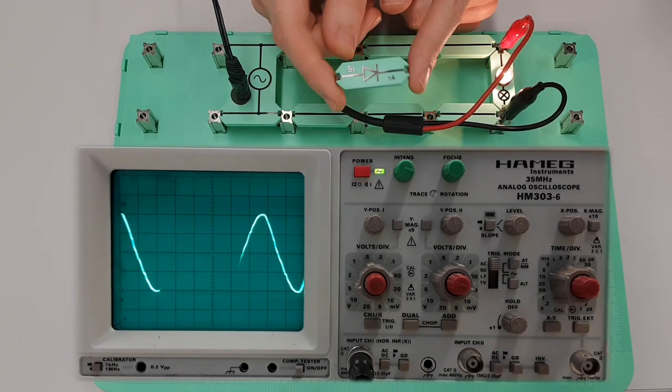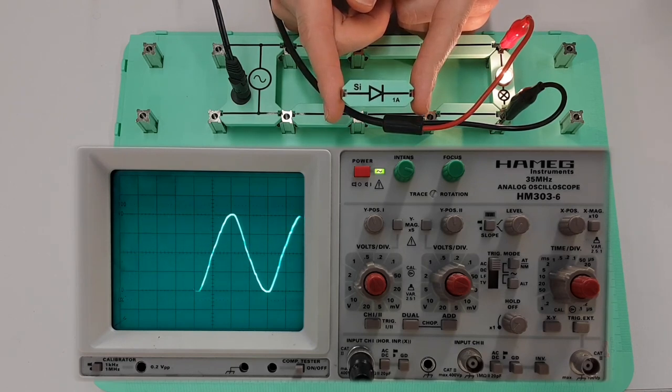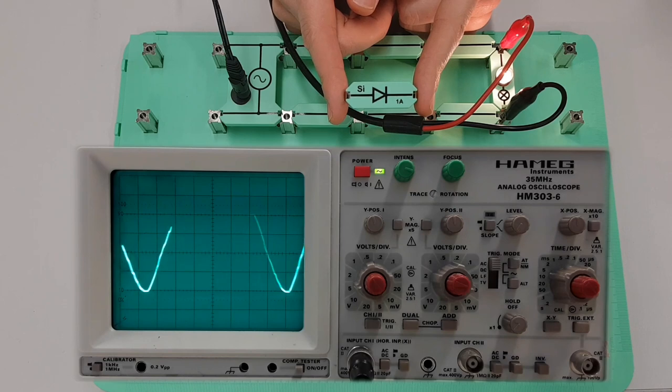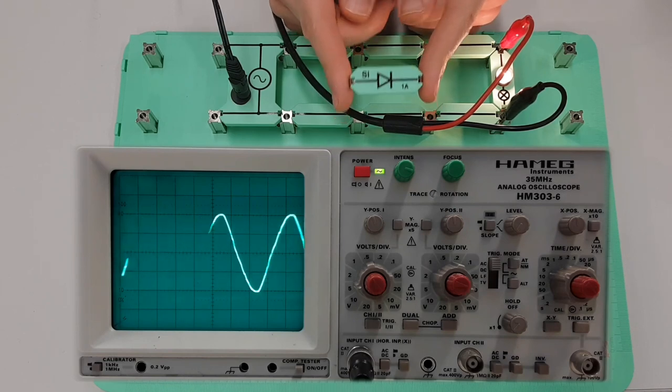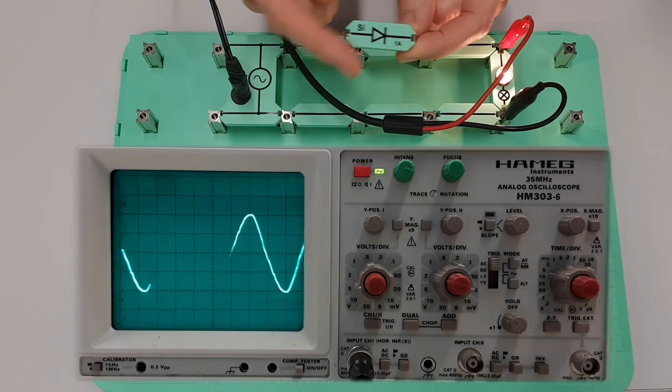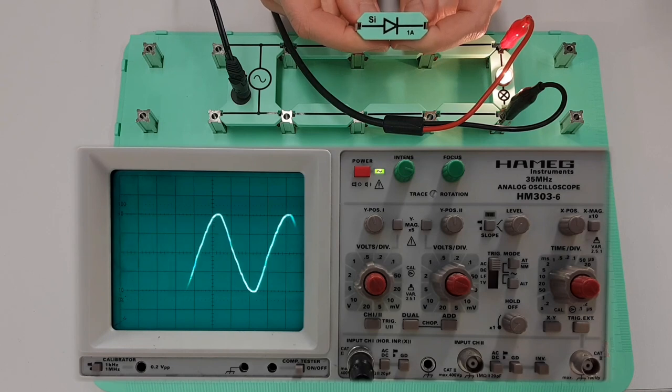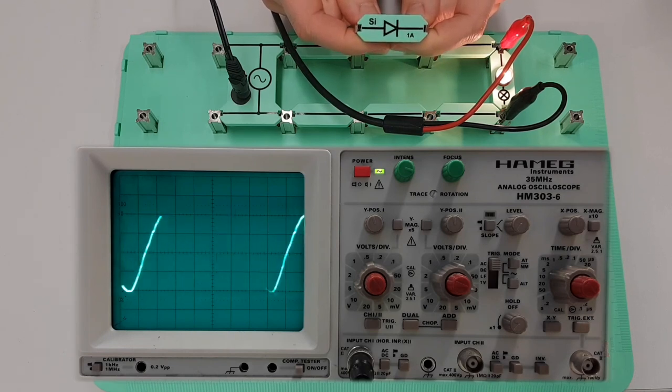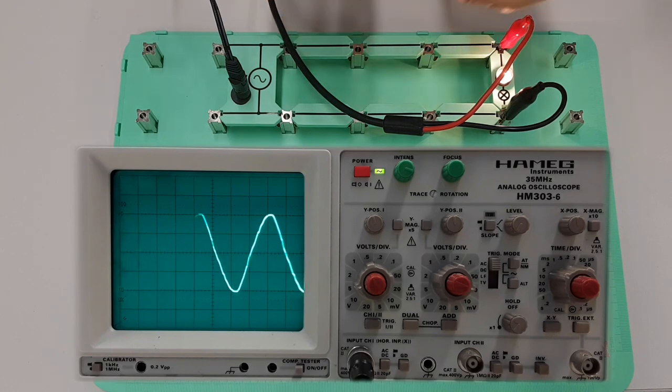Now what we can do in order to start converting this from an AC into a DC current, we can insert a diode. Now a diode kind of acts like a one-way valve for electricity. It will allow current to flow through it in this direction, but it will not allow current to flow back the opposite way. So if we connect this into our circuit it will have quite a profound effect on our waveform. So let's have a look at what happens.